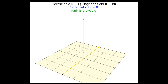The electric field is in the y-direction and the magnetic field is in the z-direction. The initial velocity is zero. The magnitude of the velocity of the charged particle changes due to the electric field, and the magnetic field exerts a force curving the path. This path is known as a cycloid. Notice the velocity vector being maximum when the y-coordinate is maximum. Every time the charged particle returns to the x-axis, its velocity is zero.